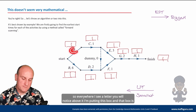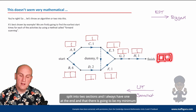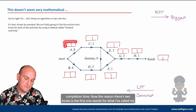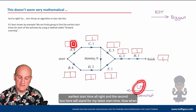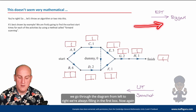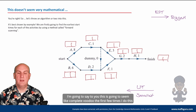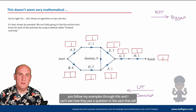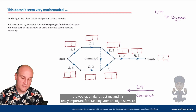I'm going to put the boxes on the edges, not the vertices. Everywhere you see a letter, above it I'm putting a box split into two sections, and I always have one at the end — that will be my minimum completion time. The first box stands for earliest start time and the second box for latest start time. This is really important for crashing later on.